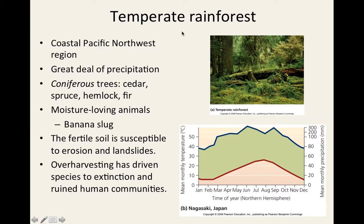The temperate rainforest is located in the Pacific Northwest — Seattle, Washington, Oregon, and surrounding areas. They receive a good amount of precipitation and are home to many conifers such as cedar, spruce, hemlock, and firs — also called evergreens. Moisture-loving animals like banana slugs are found there. The soil is fertile but susceptible to erosion and landslides due to high precipitation, as shown by the high blue precipitation line on the climatograph.